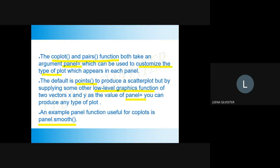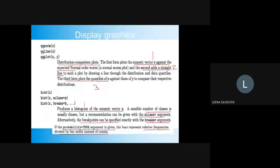For display graphics, three functions are qqnorm(x), qqline(x), and qqplot(x, y). These plot a distribution comparison plot. The first form plots the numeric vector x against the expected normal quantiles. The second adds a straight line to the plot. The third plots the contents of x against y.